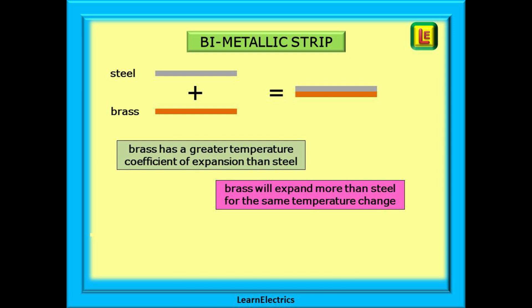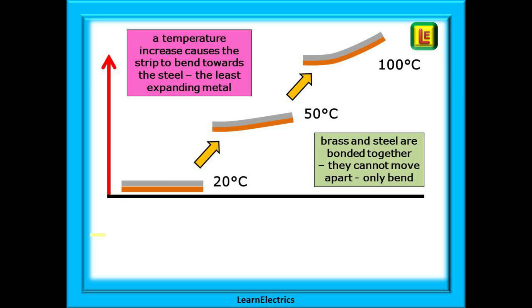Two common metals for this are steel and brass. Brass has a much higher temperature coefficient of expansion than steel which means that it will expand more for the same temperature change. A temperature increase will cause both metals to expand but the brass will expand more than the steel.